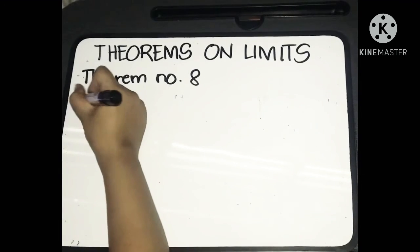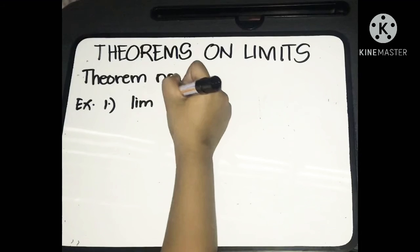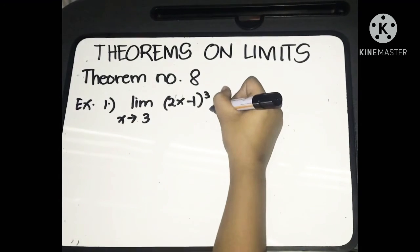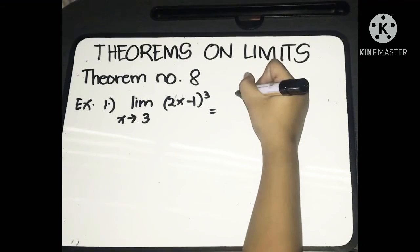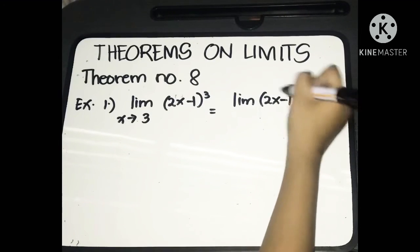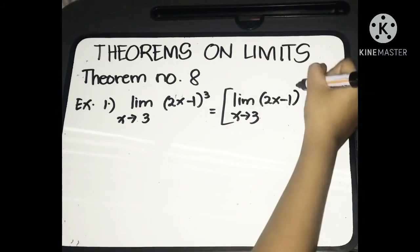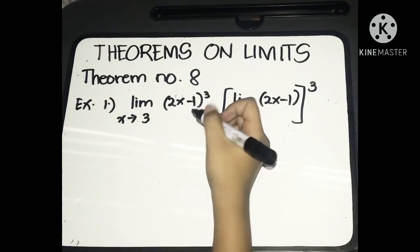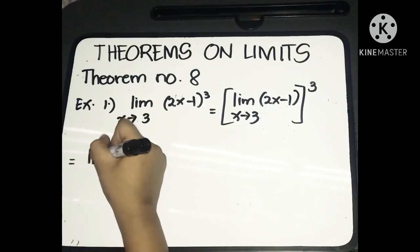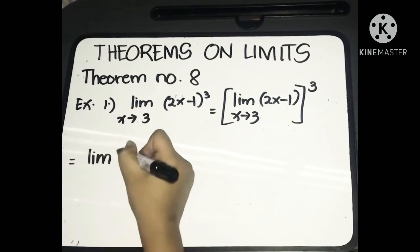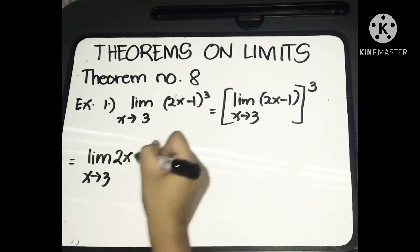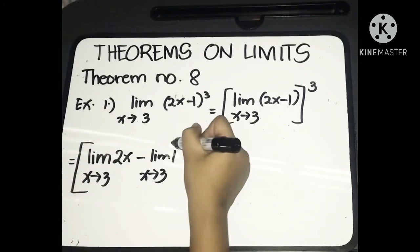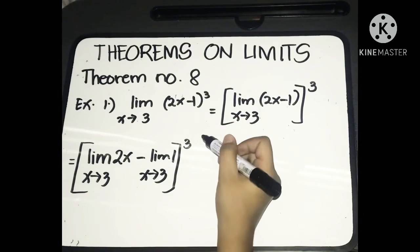Let's have the first example: the limit of (2x − 1) raised to 3, as x approaches 3. According to Theorem 8, we take the limit of the function (2x − 1) as x approaches 3, then raise the whole limit to the given exponent, which is 3. Let's simplify first the limit of the function — we have a difference, so: limit of 2x as x approaches 3, minus the limit of 1 as x approaches 3. Don't forget to raise the whole result to the exponent.